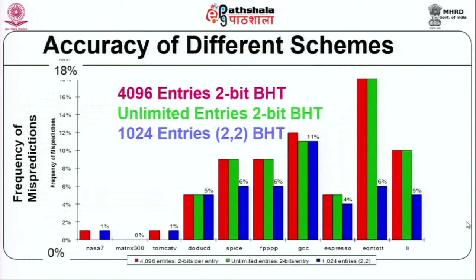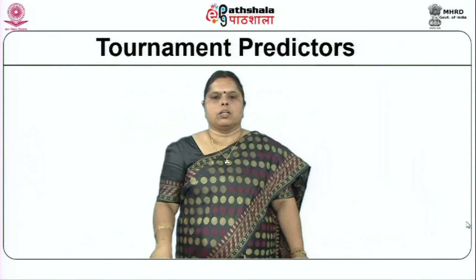Performance graphs show accuracy across different schemes: a 4K entry two-bit branch history table, an unlimited-entry two-bit table, and a 1K entry 2,2 global predictor. The misprediction frequencies have come down for the correlating predictor for most benchmark results, demonstrating improved accuracy over simple local predictors.